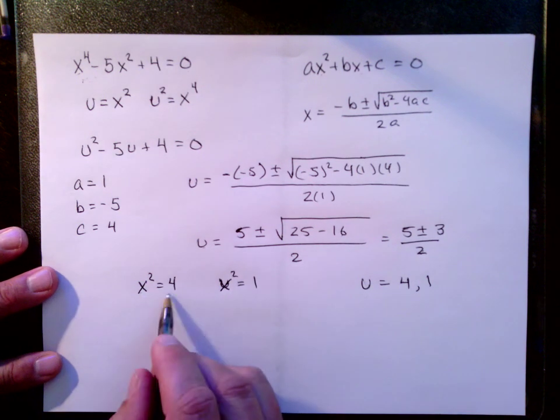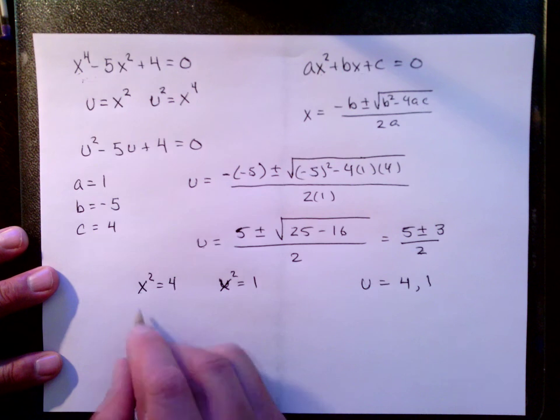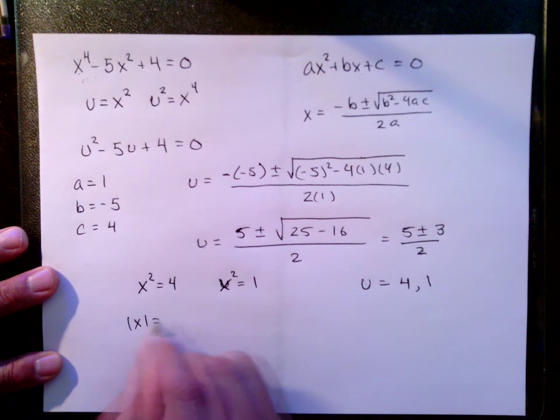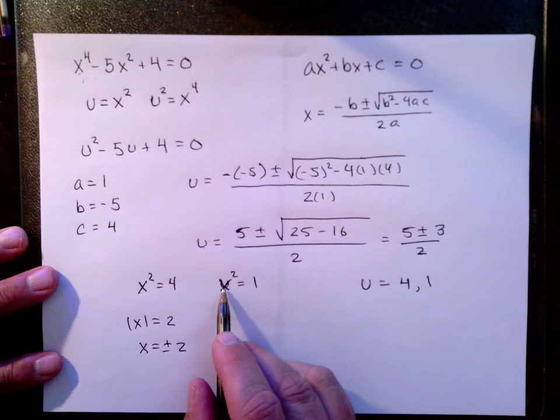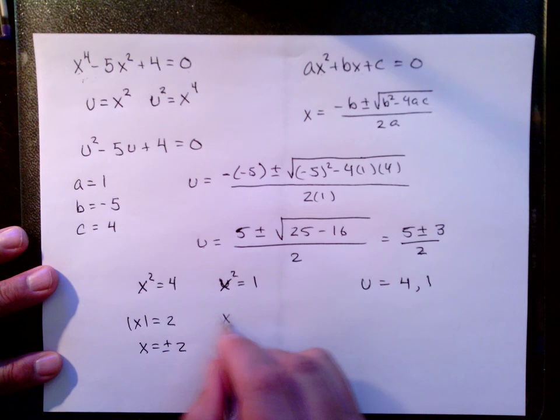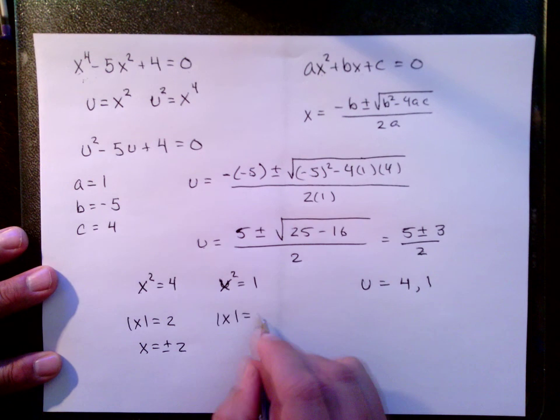Solving x squared equals 4, taking the square root of both sides, we have absolute value of x equals 2, which becomes x equals plus or minus 2. And then taking the square root of both sides here, we have absolute value of x equals 1, which is x equals plus or minus 1.